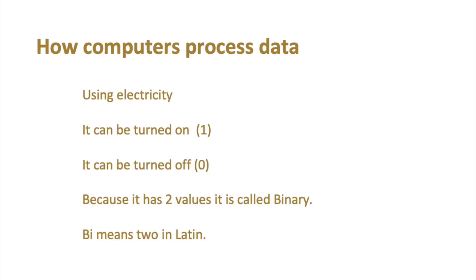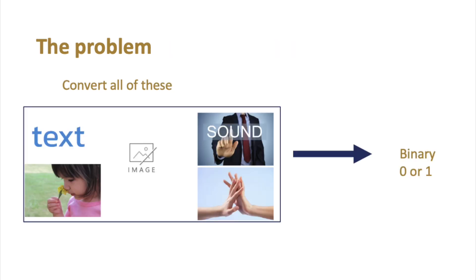Computers process data using electricity — it can be turned on, which is a one, or turned off, which is a zero. Because it has only two values, this is called a binary number system. It uses just two numbers to represent the entire world. 'Bi' means two in Latin. Our number system is called denary because we use 10 digits — 0 through 9 — and combine them to make all other numbers. So the problem is: how do you convert all real-world analog data — text, images, sound, touch, smell — into binary, which is 0 or 1?